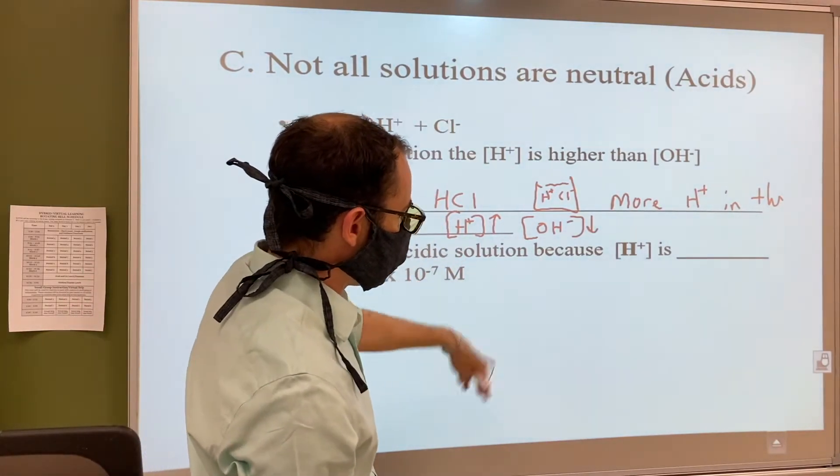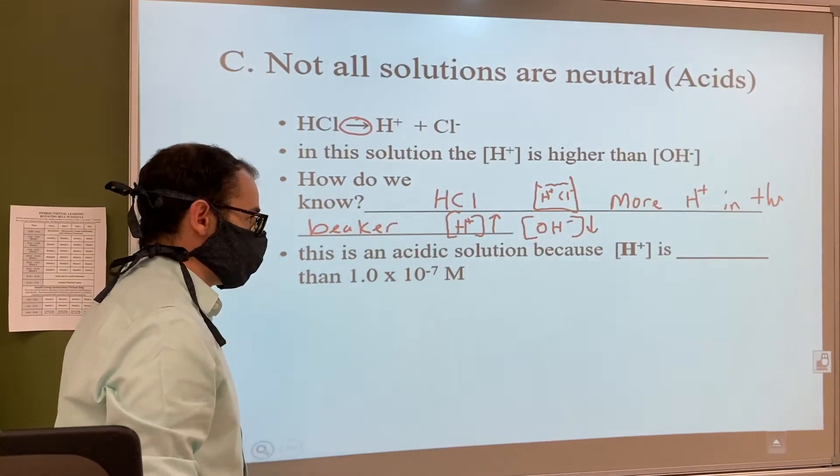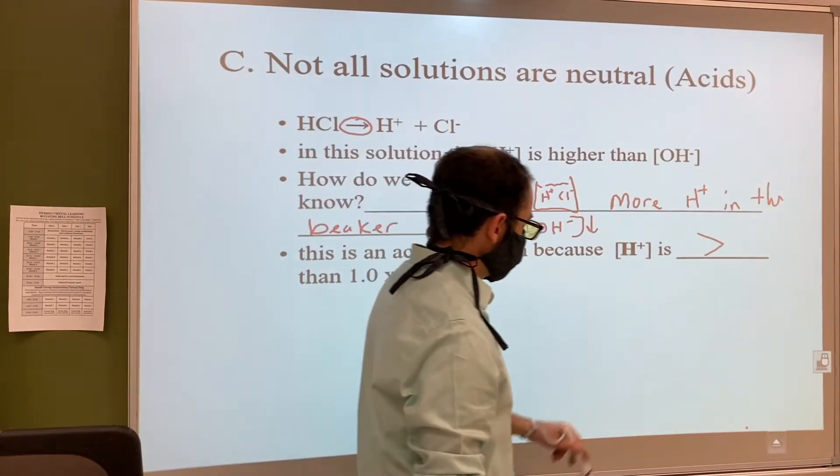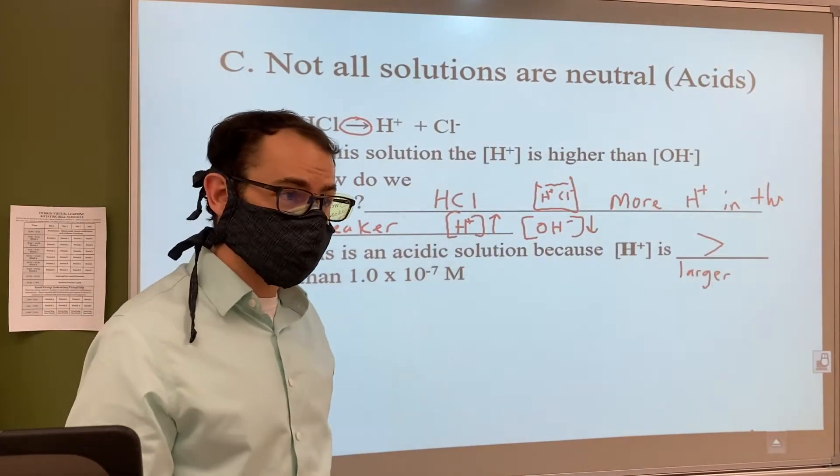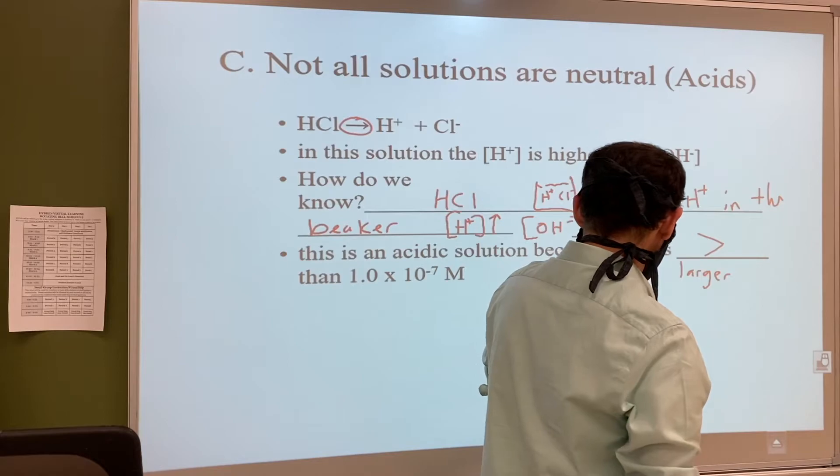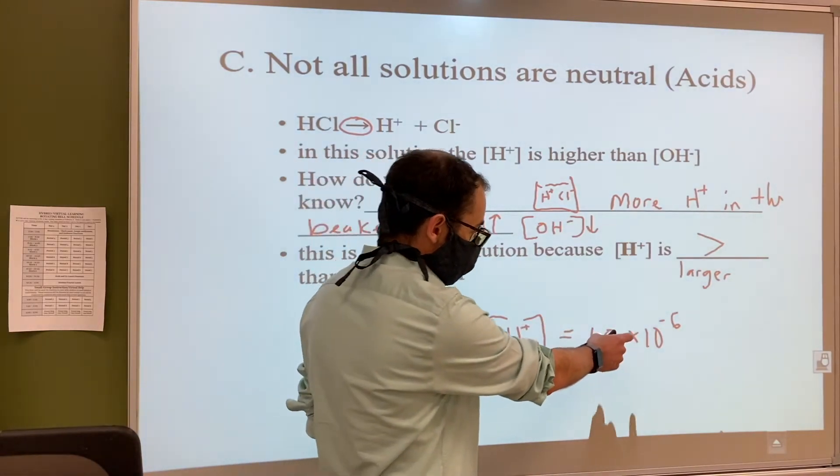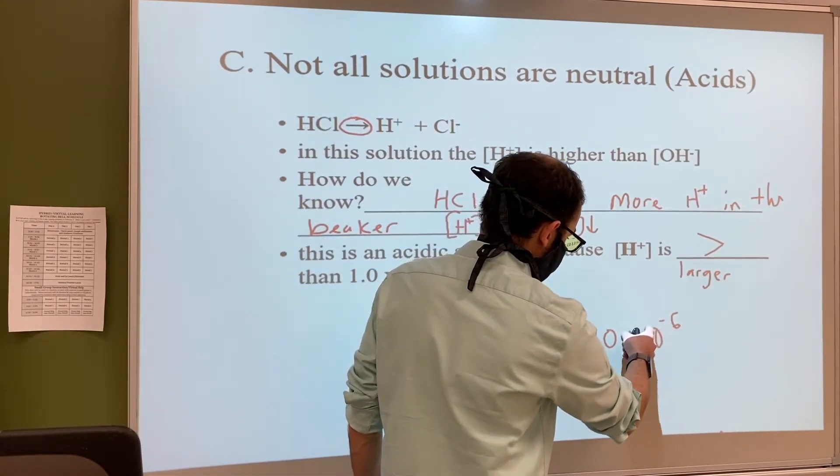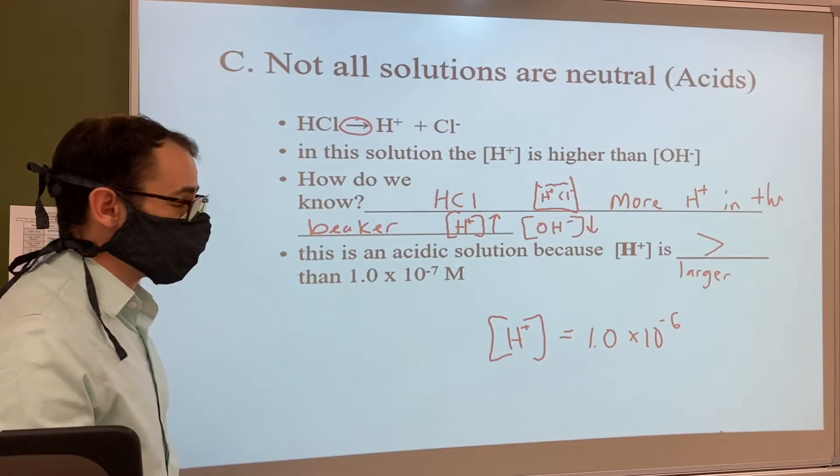This is an acidic solution because the [H+] is larger than 1.0 × 10^-7. Now this can be a little tricky. The [H+] could be, let's say, 1.0 × 10^-6. This number is larger than 1.0 × 10^-7 because it's closer to zero. You're getting closer to zero, so 10^-6 is going to be larger than if it was 10^-7 or 10^-8.